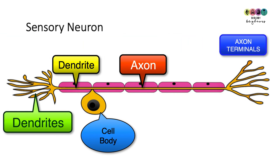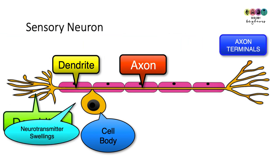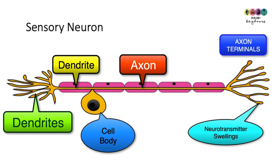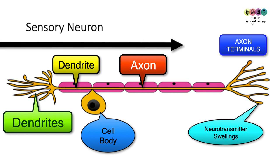The impulse travels along the axon towards the axon terminal area, and the very ends of the sensory neuron end in swellings known as neurotransmitter swellings. It's really important that on any diagram of any neuron, you always draw in an arrow to show the direction the impulse is travelling in — if you don't, you lose valuable marks.